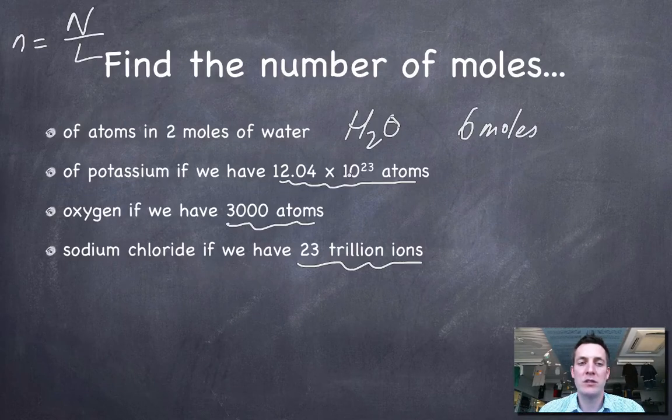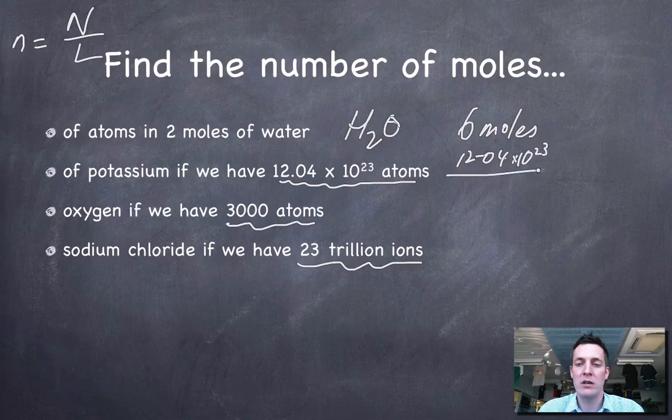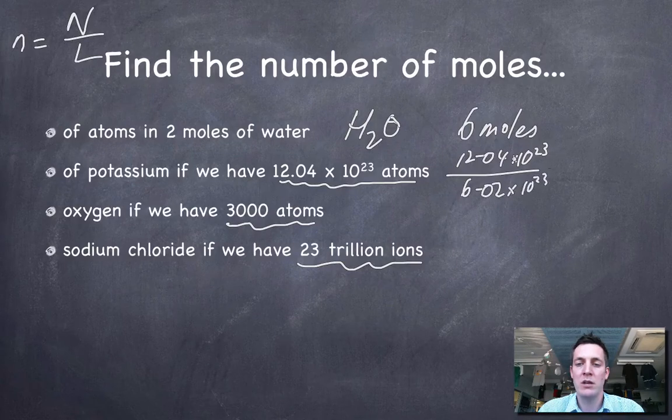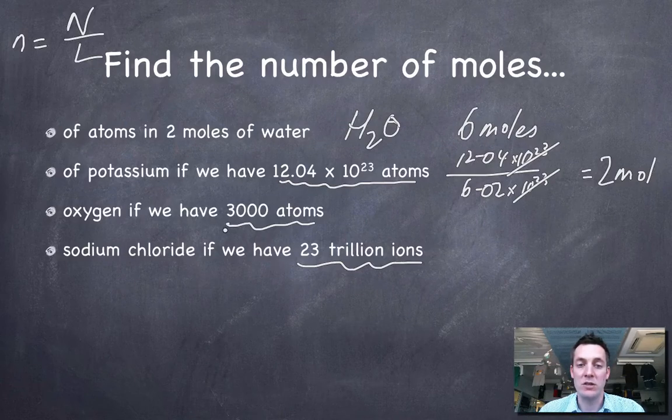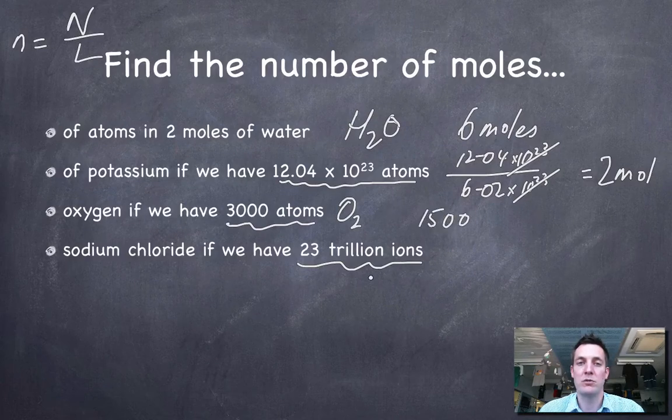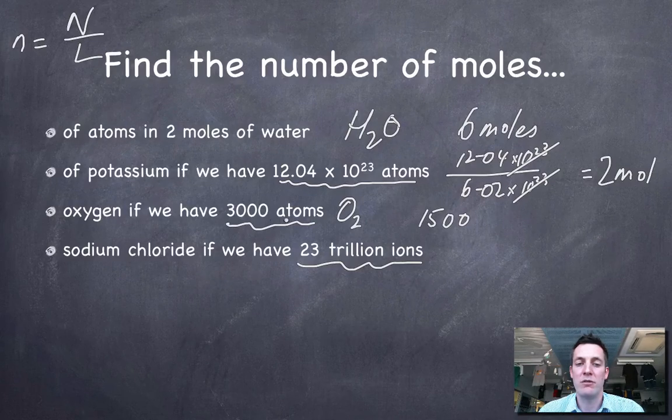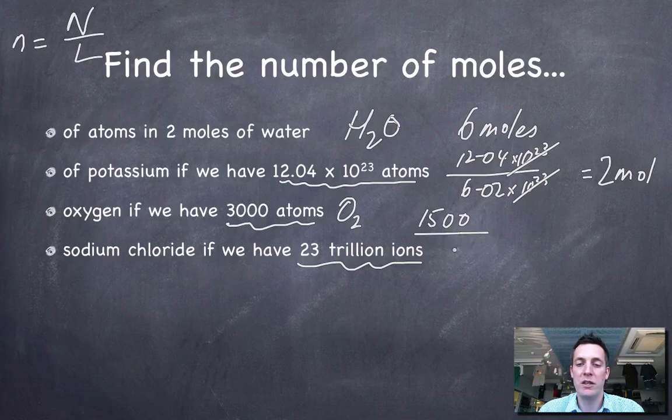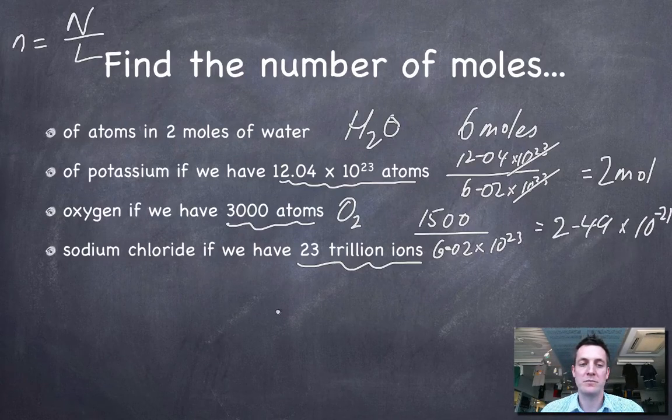If I've got 12.04 times 10 to the 23 atoms, then capital N is 12.04 times 10 to the 23. And if I divide that by Avogadro's number, 6.02 times 10 to the 23, those two things cancel. This is simply twice as big as that. So there are 2 moles. 2 moles of potassium if I have that many atoms. Now if I have 3,000 oxygen atoms, on the other hand, because I know that oxygen is O2, I'm only going to be able to make 1,500 molecules. If I'm being asked about oxygen, that's what I'm being asked about. How many moles of oxygen do I have if I've got 3,000 atoms? Well, I've got 1,500 molecules. I divide that by 6.02 times 10 to the 23. And what do I find? I find that that's 2.49 times 10 to the minus 21 oxygen molecules.